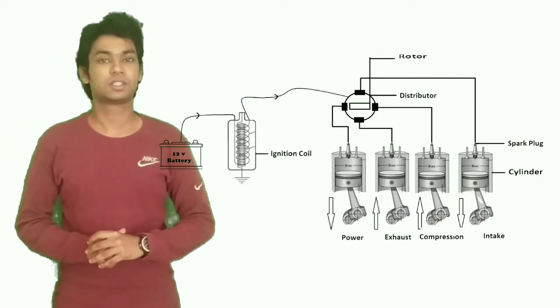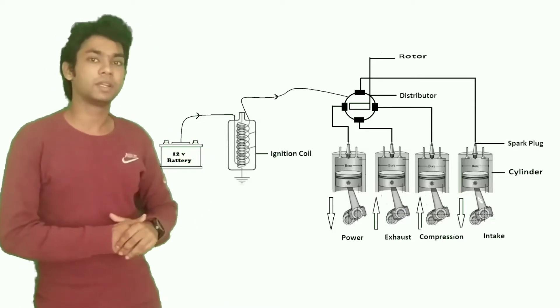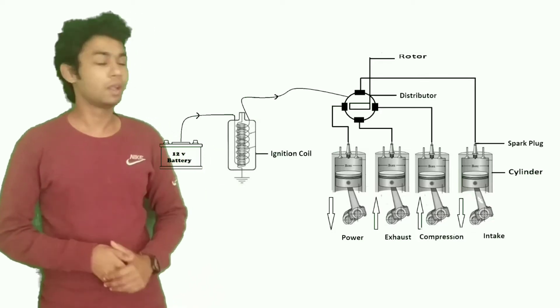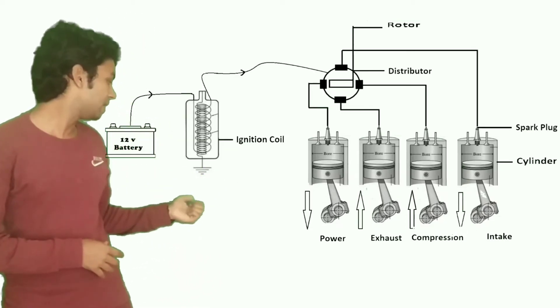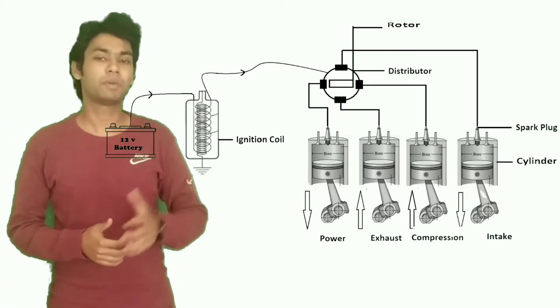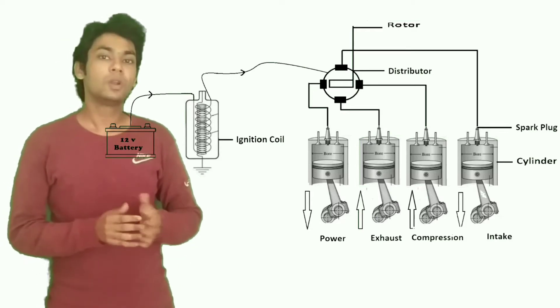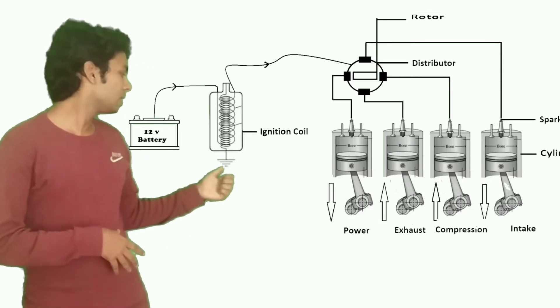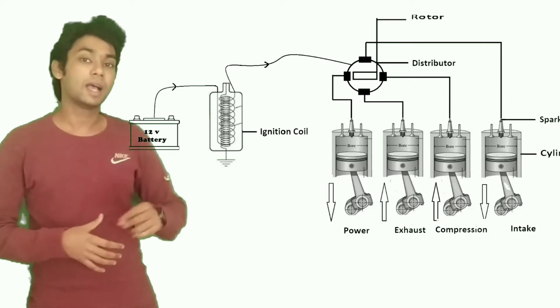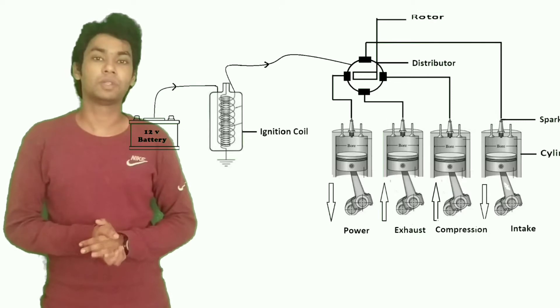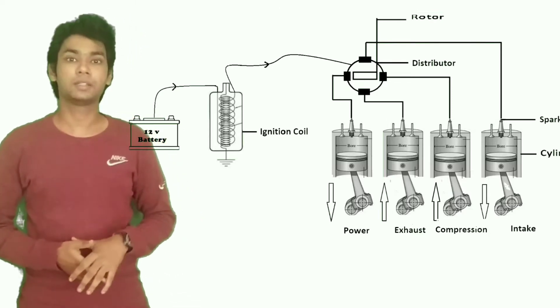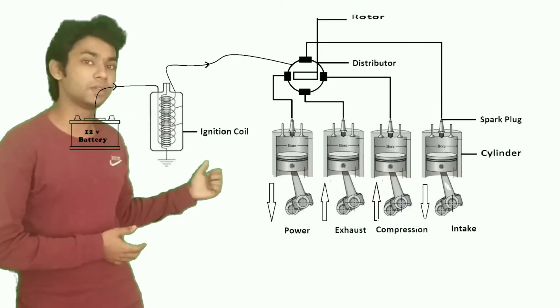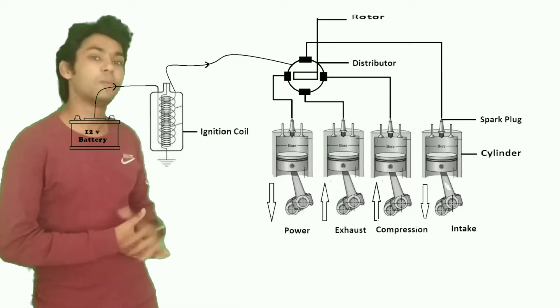The sequential process of the ignition system starts with supply from the battery. From the battery, the supply goes to the ignition coil. In the ignition coil, there are primary windings and secondary windings. The main purpose of the ignition coil is to step up the voltage from the battery, because the battery voltage is not sufficient to carry out the ignition process. Current flows through the primary windings to the secondary windings, where the step-up process occurs, achieving the required 40,000 to 1 lakh volts. This high voltage then transfers to the distributor.